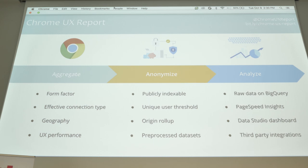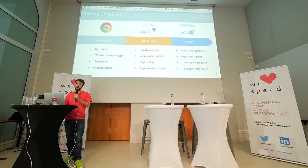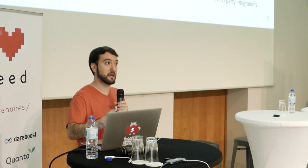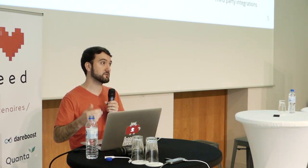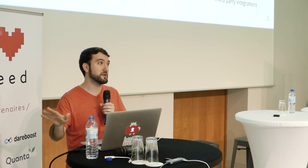For example, the paint metrics and the loading metrics. It also collects qualitative metrics about the user's experiences: the device they're using, their effective connection speed, and also their physical geography. Google processes the data and omits anything that does not meet our privacy standards. So if a website does not want to be indexed by Google in the search results, then we omit this from the results.